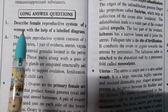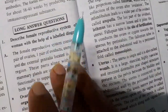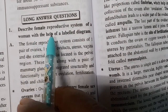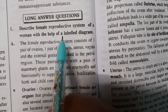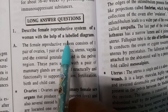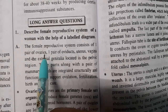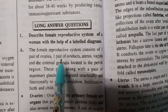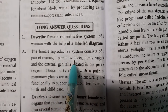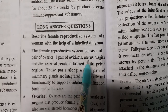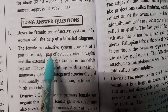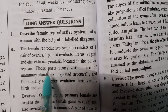Hello, good morning. This is the first part of the human female reproductive system. The female reproductive system consists of a pair of ovaries, a pair of oviducts (also called fallopian tubes), uterus (otherwise called womb), vagina, and the external genitalia. All of these are located in the pelvic region.